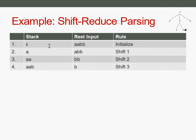The first rule it knows is called shift. That means it moves one symbol from the rest input onto the stack. Here it performs shift three times: it shifts the first A from the rest input onto the stack, then shifts the second A onto the stack, and in the third step it shifts the first B also onto the stack.